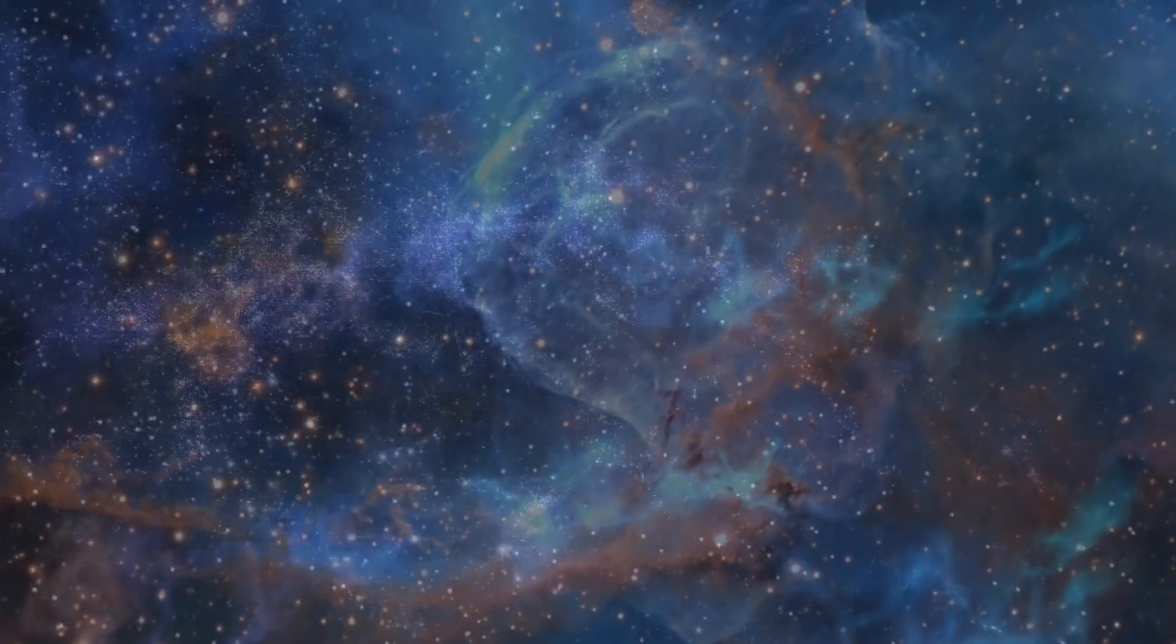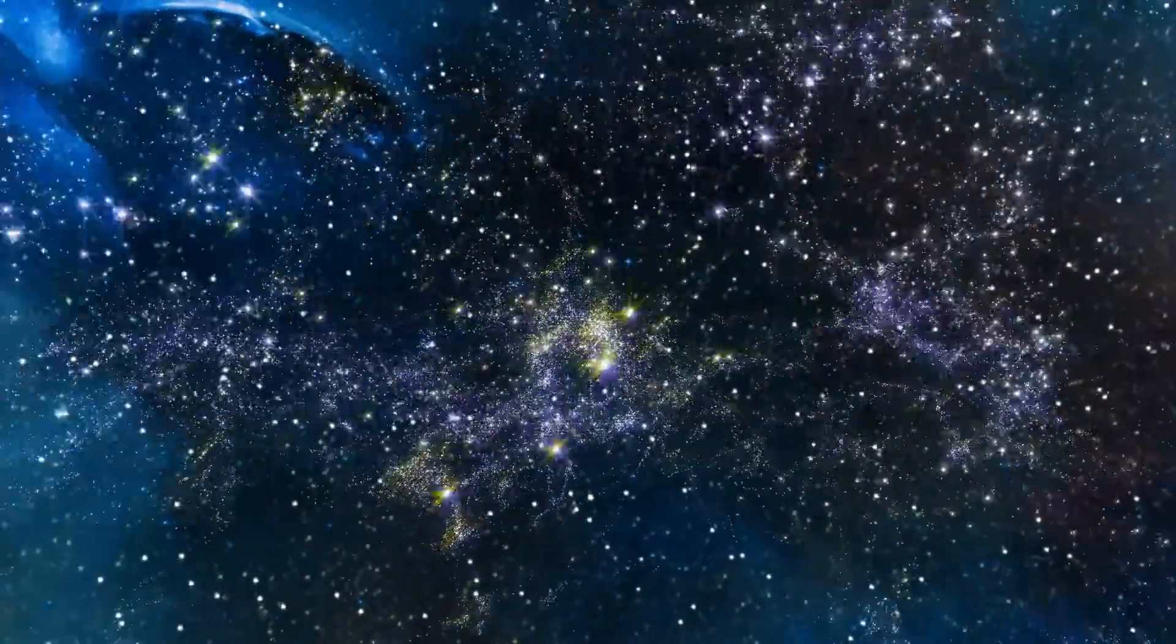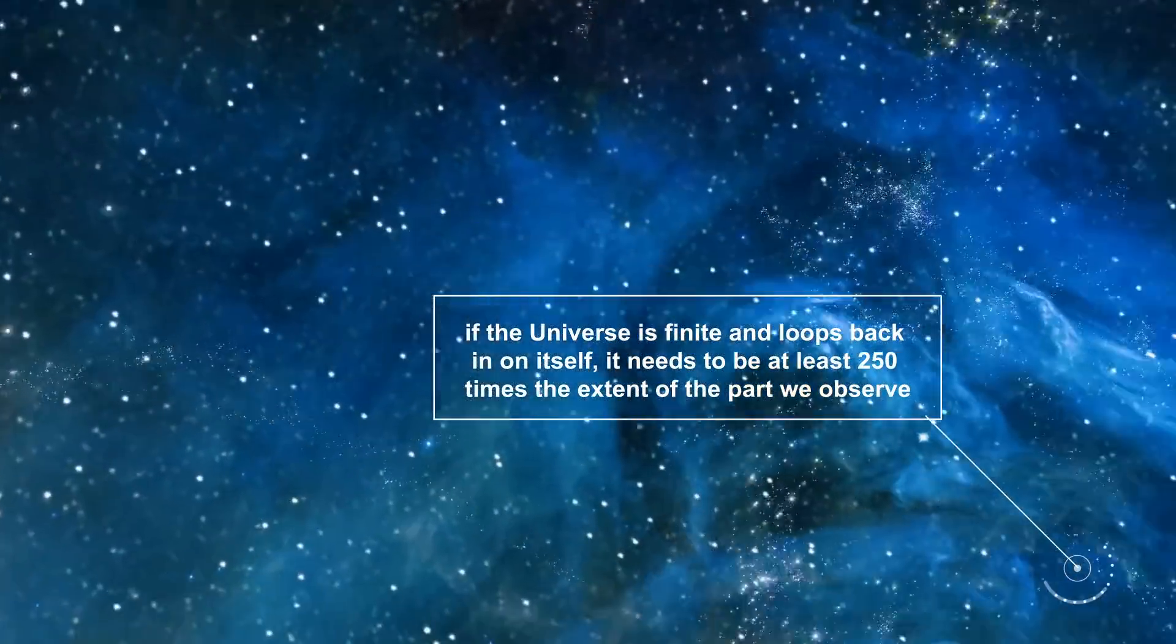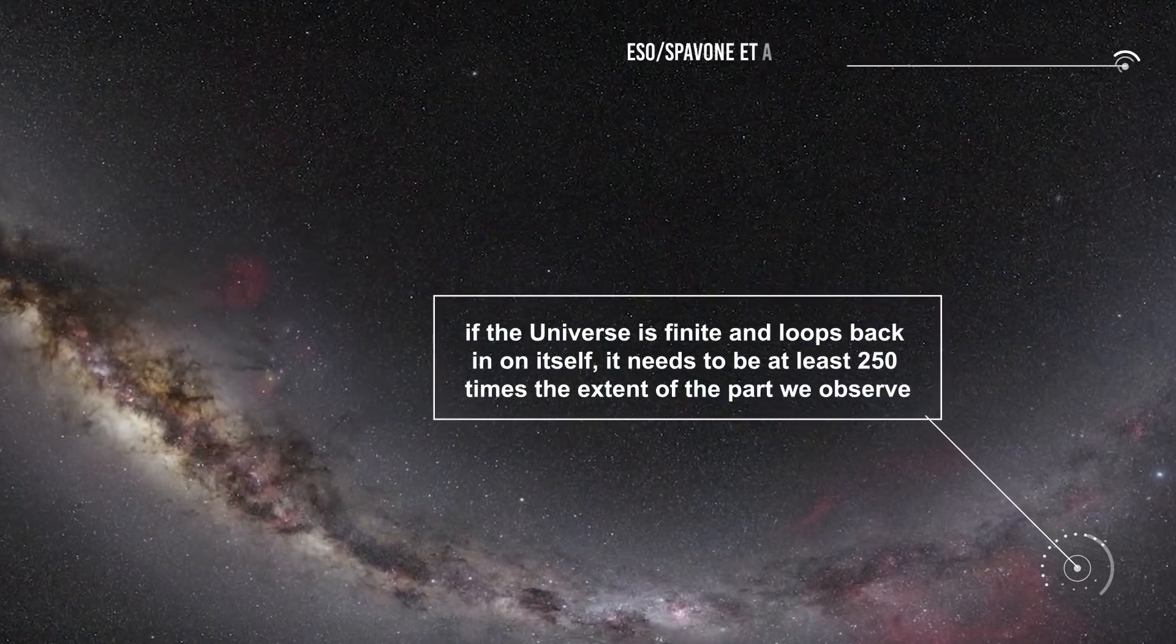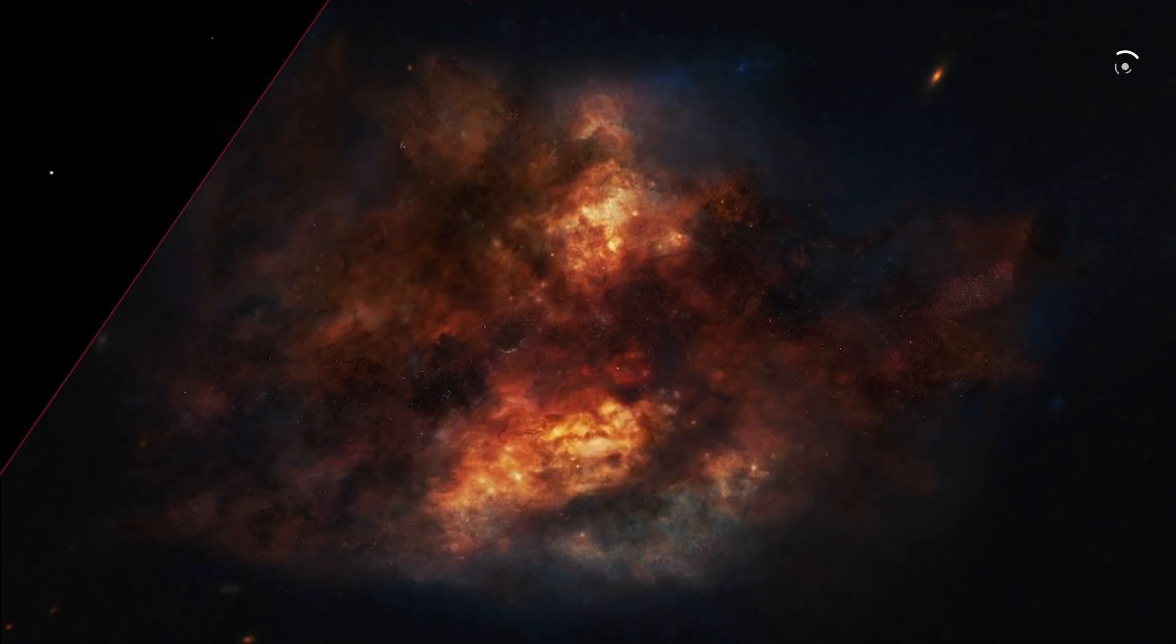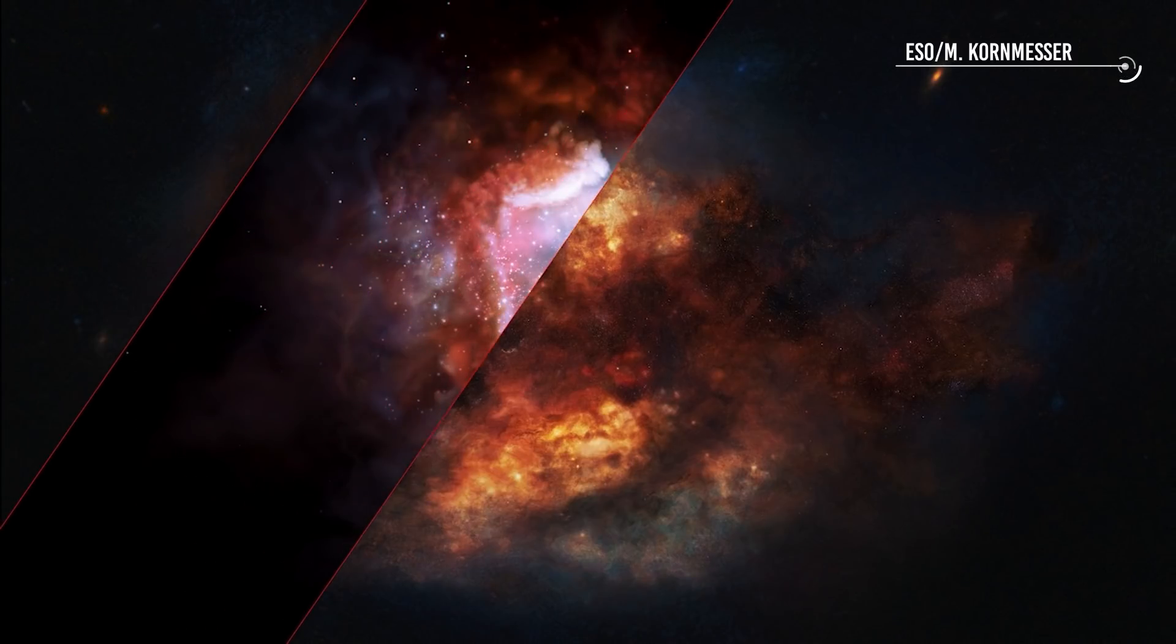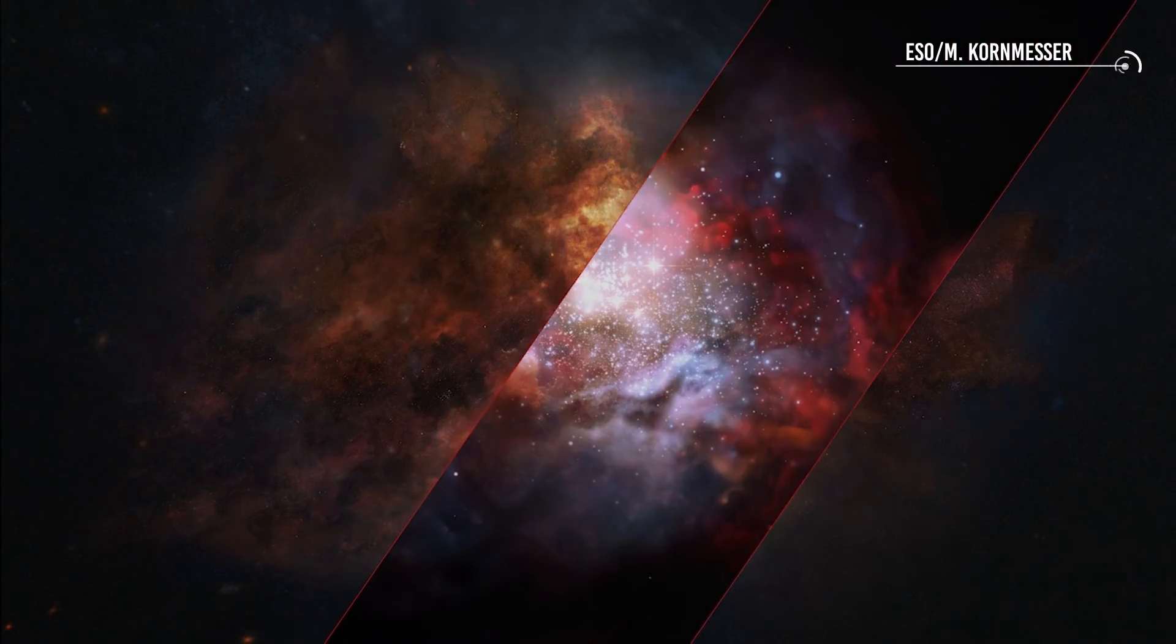But what does the CMB have to do with the size of the universe? While combining both the cosmic microwave background and the large-scale structure of the universe, we get some constraints that tells us that if the universe is finite and loops back on itself, it needs to be at least 250 times the extent of the part we observe. Since we live in a 3D volume, 250 times the radius means 250 to the power of 3 times the volume, or more than 15 million times as much space.